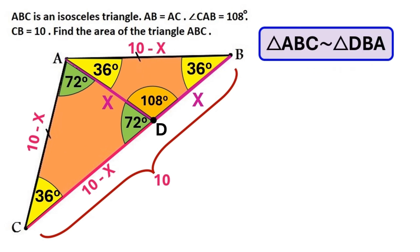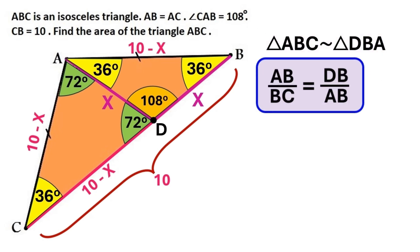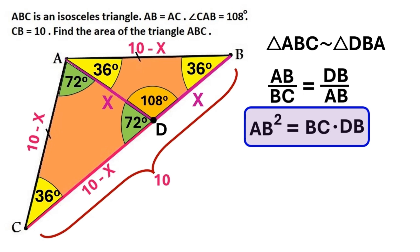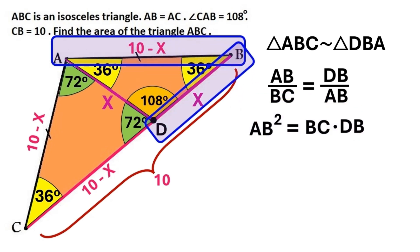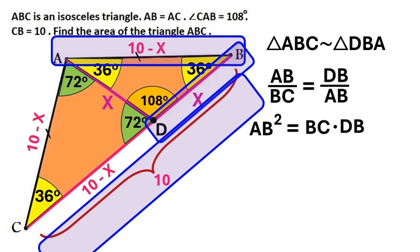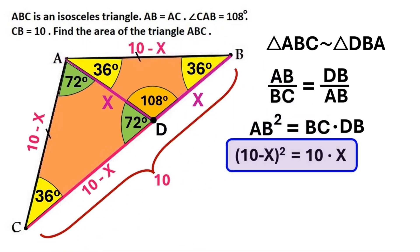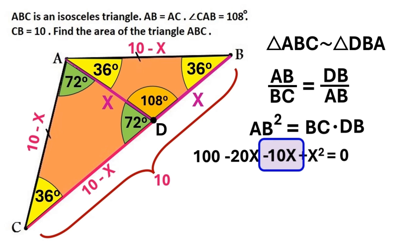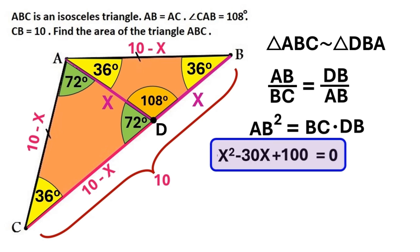We can express the similarity like this, from which we can deduce this ratio: AB over BC equals DB over AB. Let's cross multiply that, and we get this equation. We already know that AB is 10 minus X, DB is X, and CB is 10. So let's plug all those values into our equation. We can expand the square of the quantity 10 minus X, and moving the 10X over gives us minus 10X. We now have this quadratic equation, which looks tricky to solve.